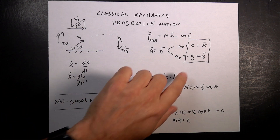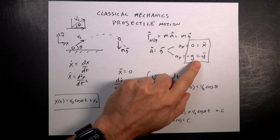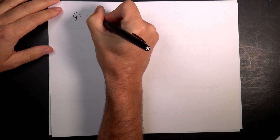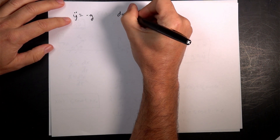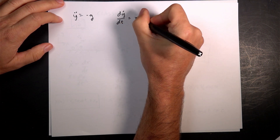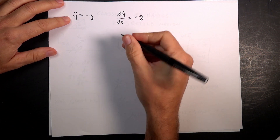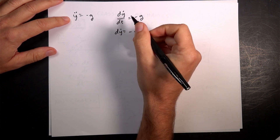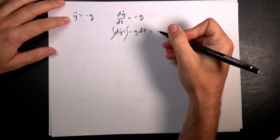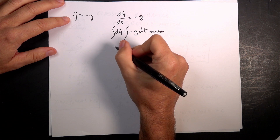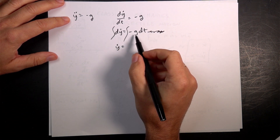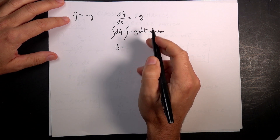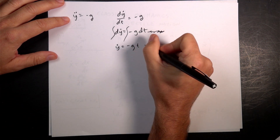Now let's look at the y equation — it's a little different because it's not equal to zero. y double dot is negative g. I'm going to write this as dy dot dt equals negative g. I multiply both sides by dt and get dy dot equals negative g dt. Now I'm going to integrate both sides, and I get y dot — the integral of negative g as a constant gives me negative g t plus a constant.